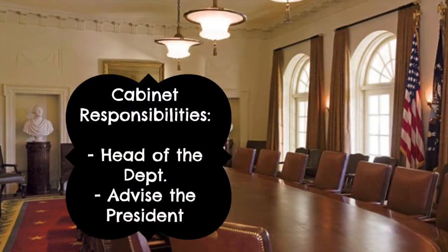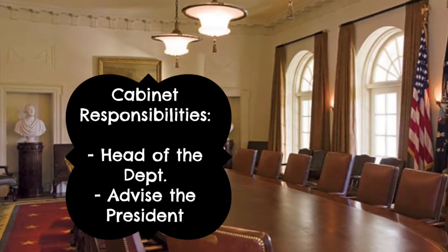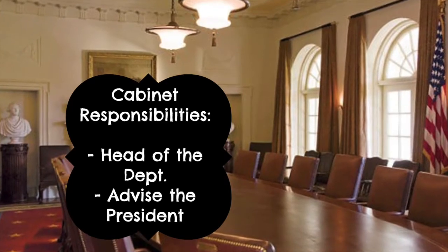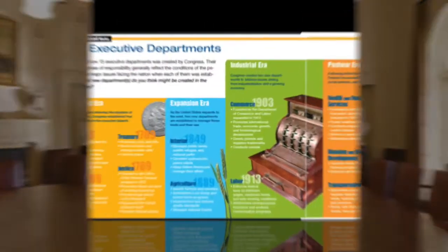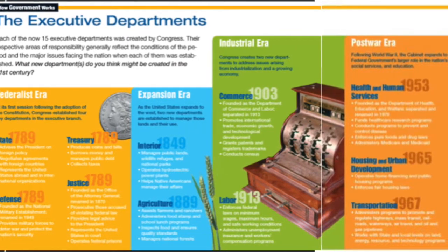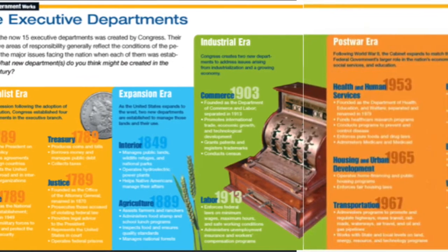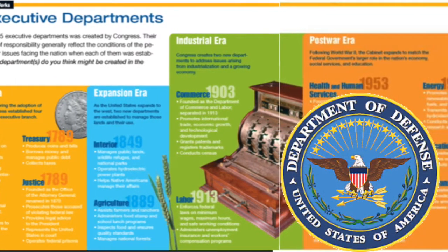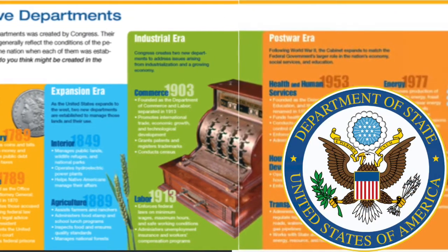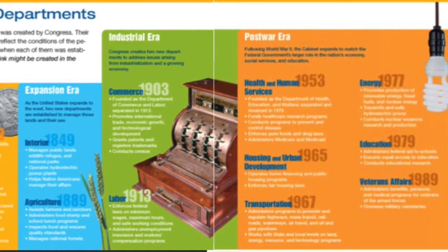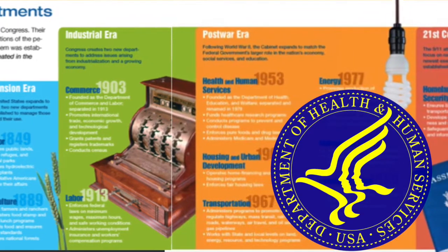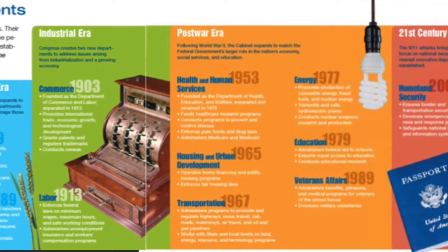Cabinet members have two major responsibilities: individually, each is the administrative head of one of the executive departments, and collectively they are advisors to the president. Today, the executive departments vary a great deal in visibility, size, and importance. The Department of Defense is the largest, with nearly 700,000 civilian workers. The Department of State is the oldest and most prestigious but among the smallest, with only 30,000 employees. The Department of Health and Human Services has the largest budget, accounting for about one-fourth of all federal spending.